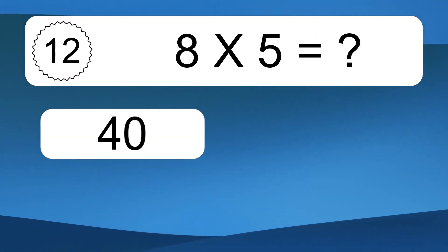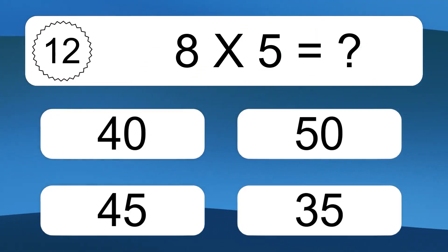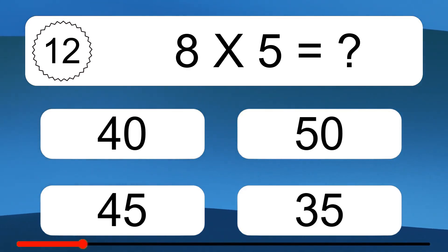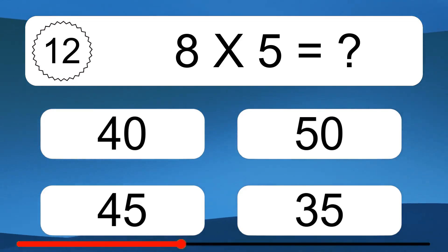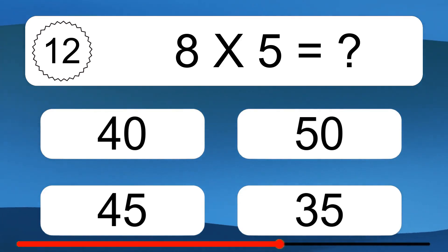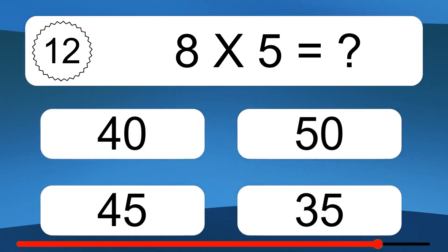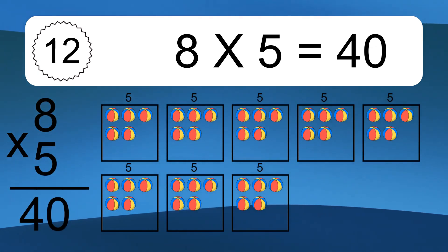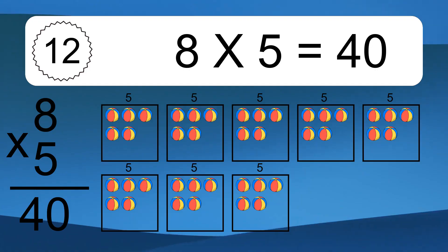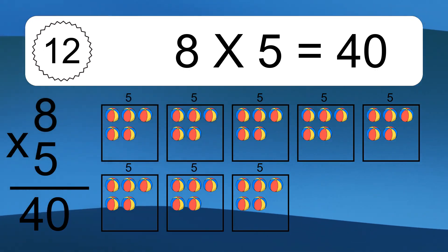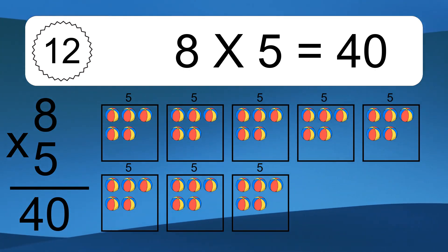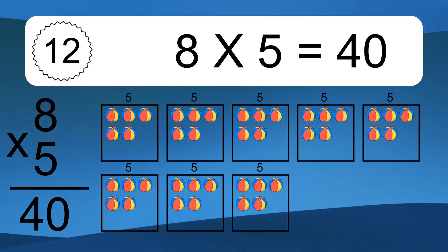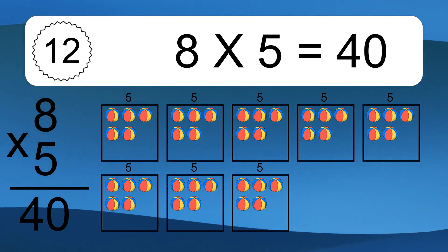This equals 24 balls. 8 times 5 equals what? 8 times 5 equals 40. We have 8 boxes, and each box has 5 colorful balls inside. If you count all the balls in all the boxes together, you will have 8 times 5 balls. This equals 40 balls.